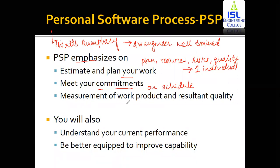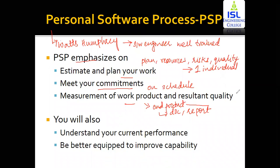The next is measurement of work product and resultant quality. Projects fail because the work product — the end product being developed, including software, documentation, and reports — is not up to the mark. These documents do not have all the specifications and the quality of the software is low. PSP focuses on these three main criteria to train the individual so he can best perform on the software he will be working with in the future.